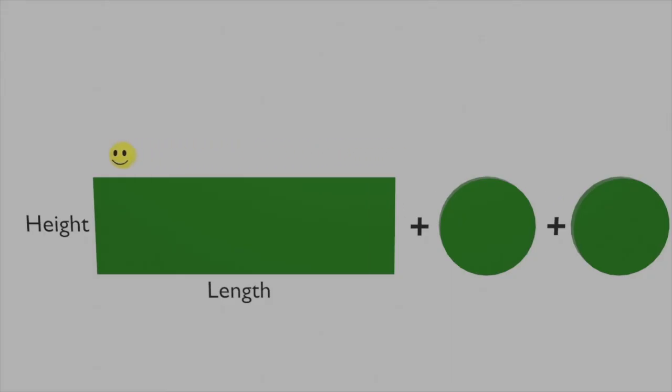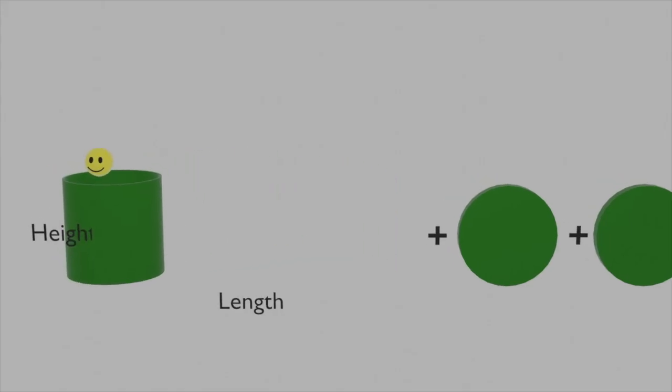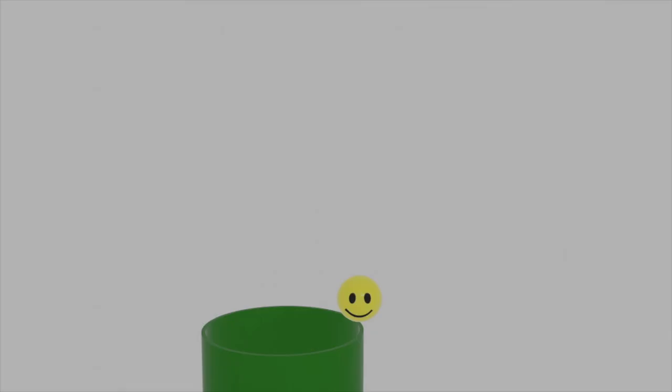It turns out, if I wrap this back around, you can easily see that the length of the rectangle is the circumference of the circle of the top of the cylinder.